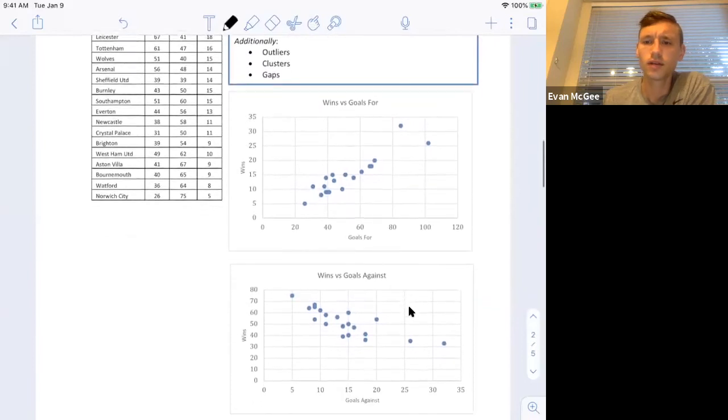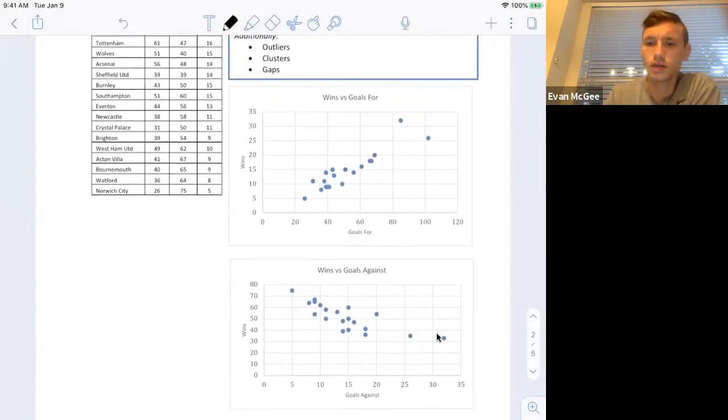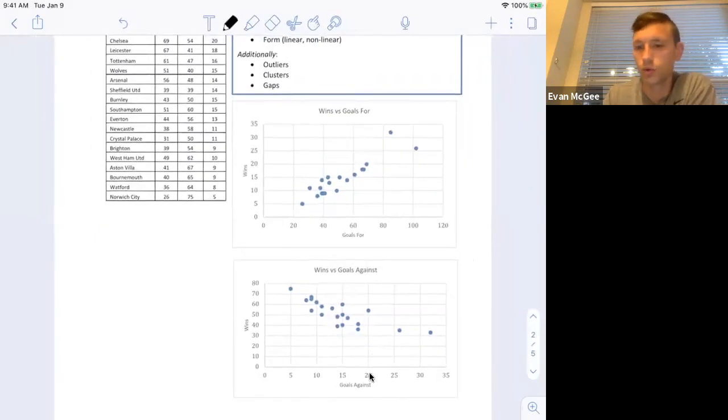And then are there any outliers? It looks like there could be maybe one outlier here, possibly two. Looks like the main cluster is between five and 20. And a gap between 20 to 25 or 21 to 26.